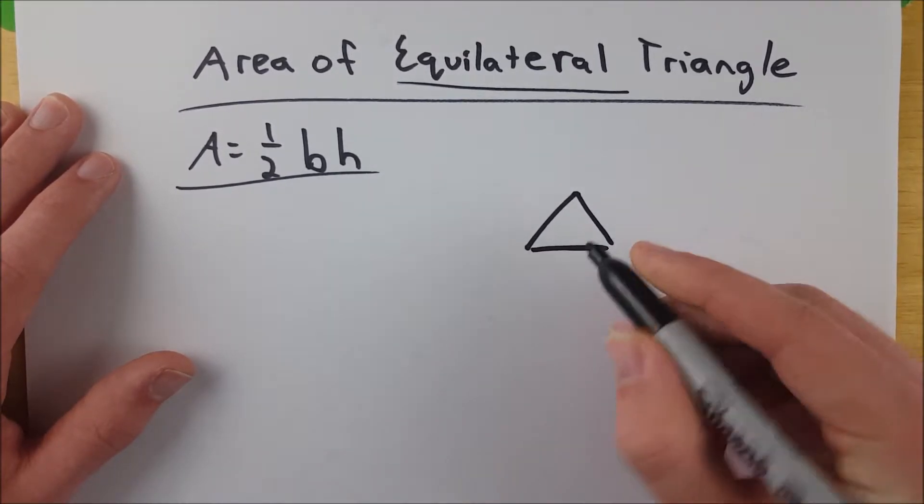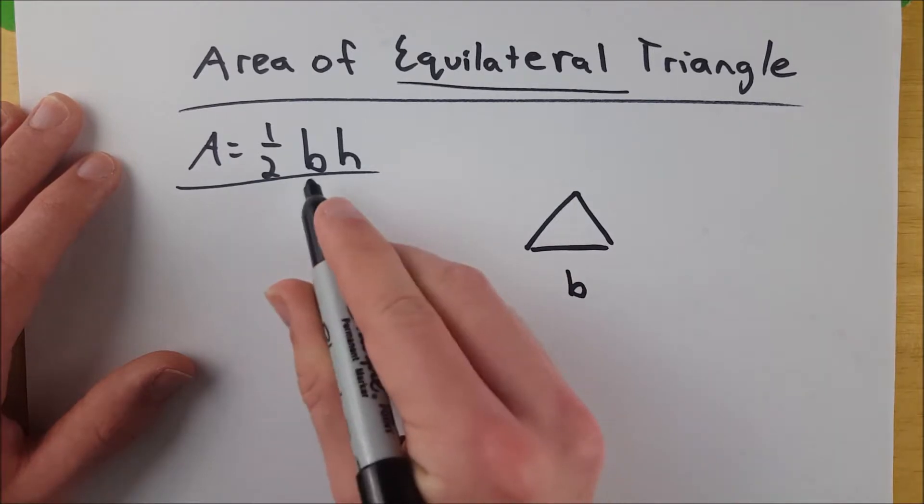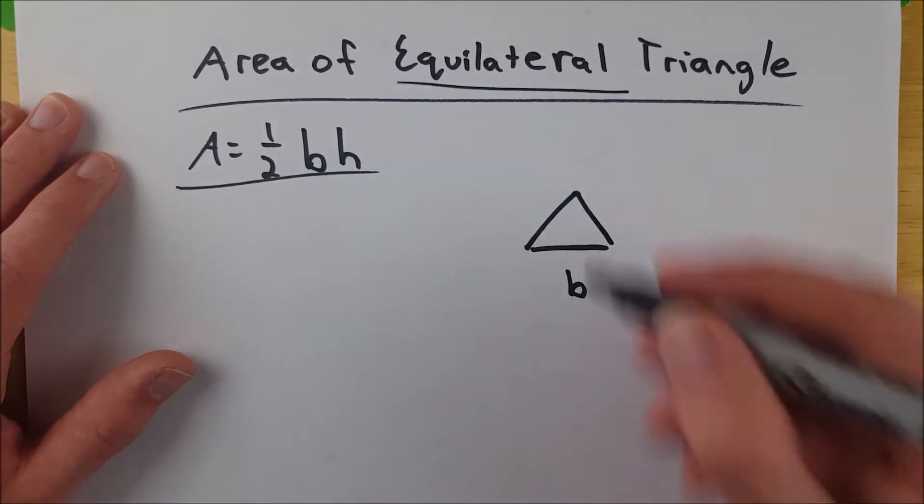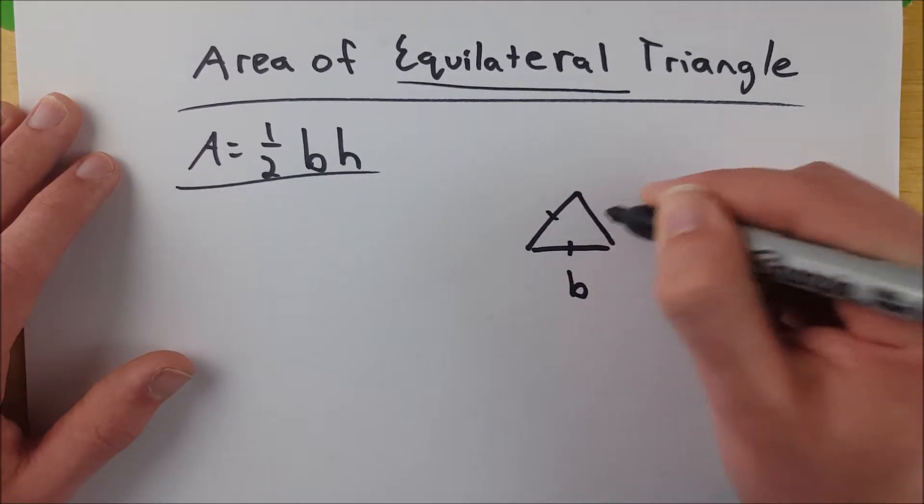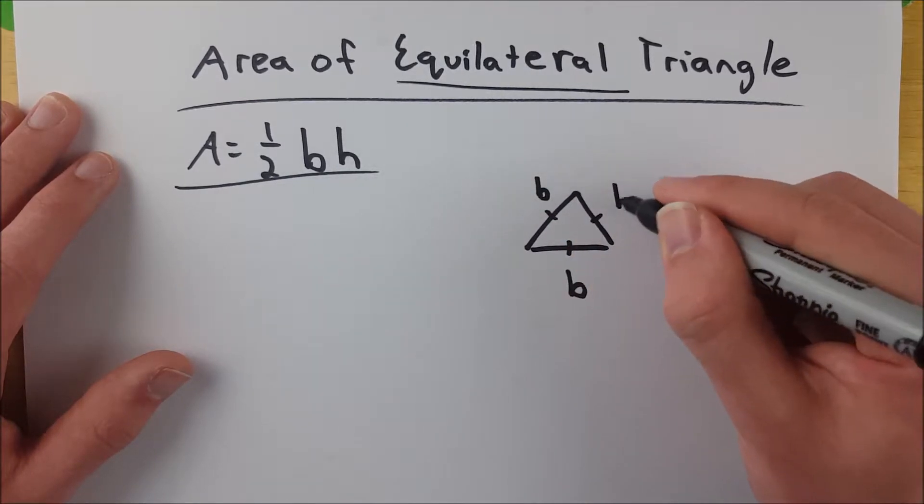Let's say the length of its base is b, and that's one variable in our area equation. But because it's an equilateral triangle, every side is congruent, so every side is b.